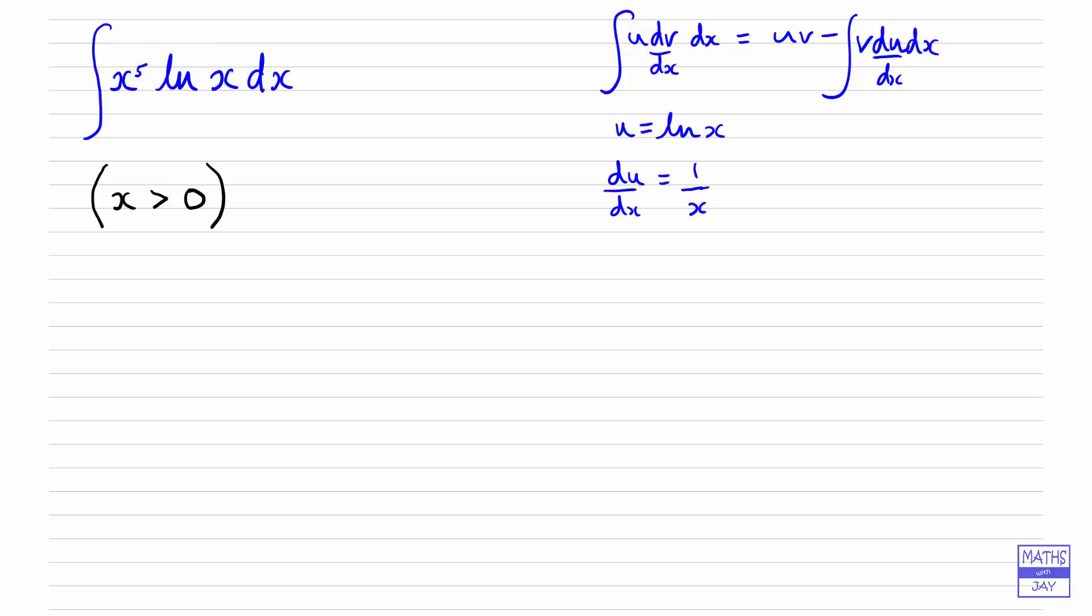So if we've taken u as equal to log x, then we need to take dv by dx as the other part of the product, which is x to the power of 5. So it looks as if it's going to get more complicated when we integrate because it goes up by 1, so x to the power of 6 over 6.